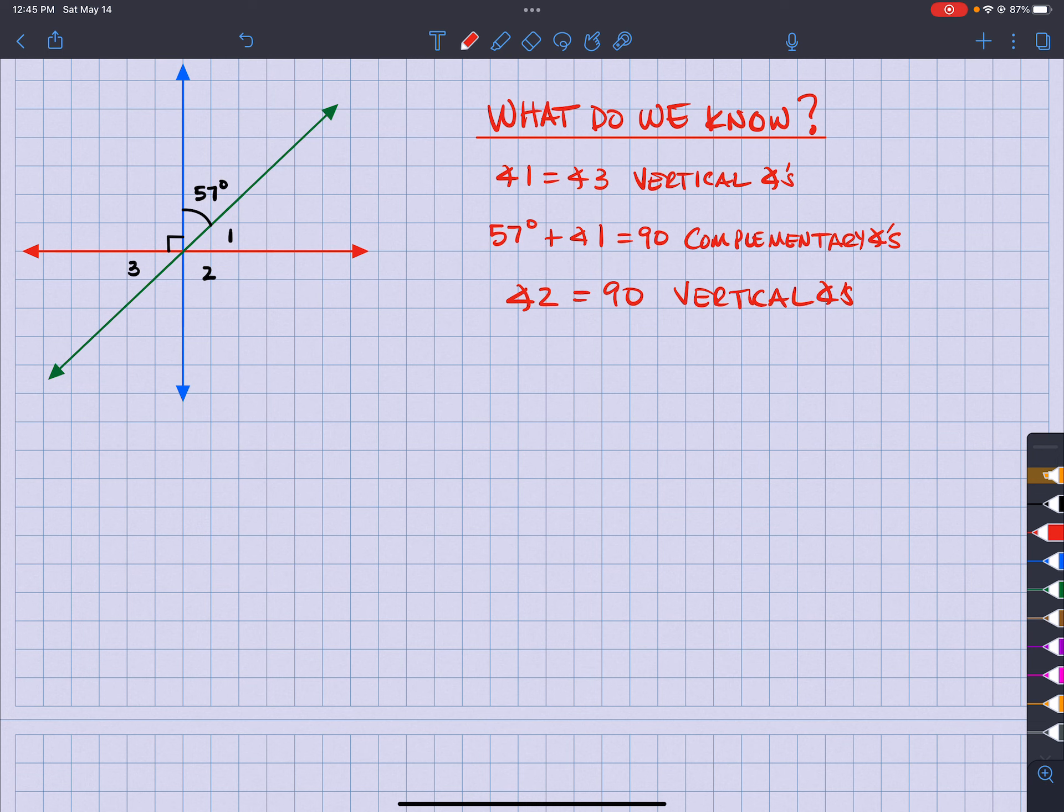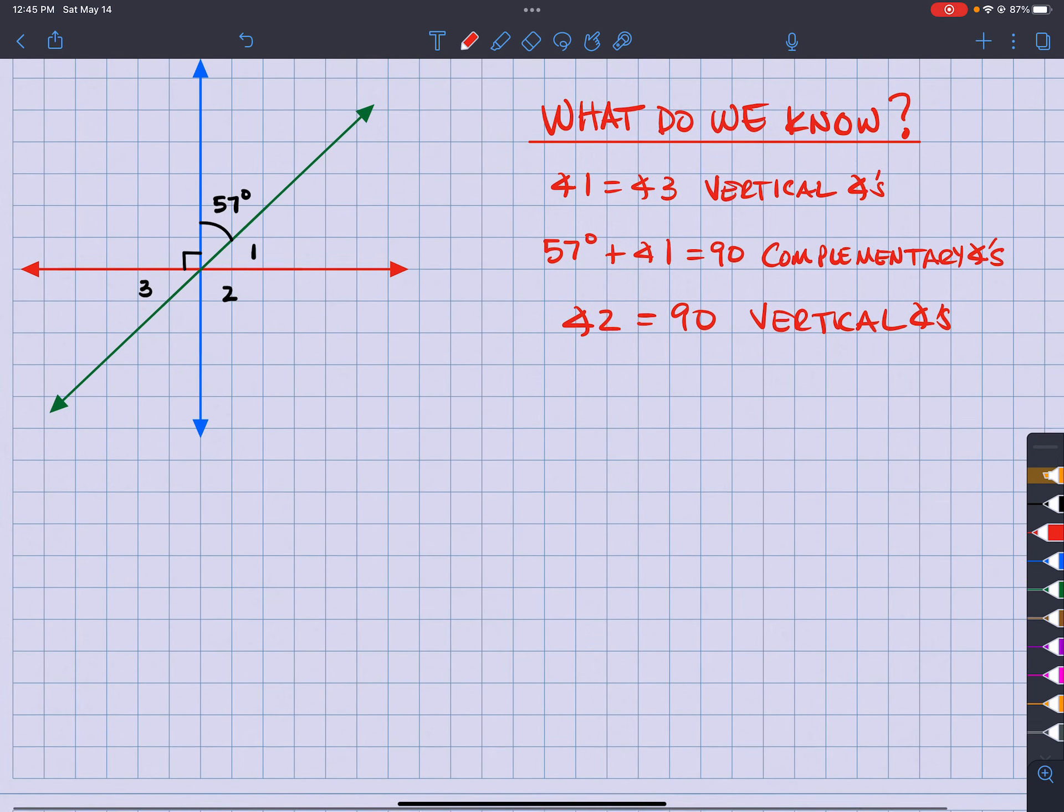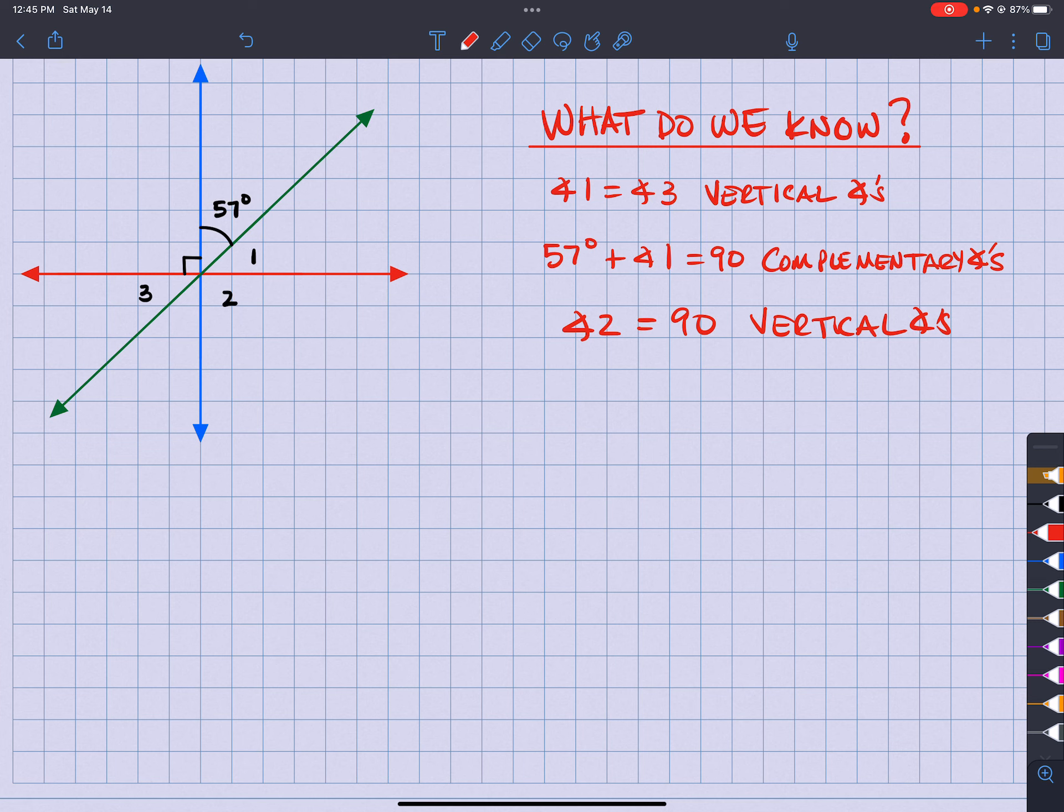Alright. With that being said, let's take a look here. So I got angle 1. Well, we already have one answer, right? We already have that angle 2 is equal to 90 degrees. We have that angle 1 is going to be, so I got 57 degrees plus angle 1. That's equal to 90. So angle 1 must equal to, when I subtract that 57 over, I'm going to have 33 degrees.